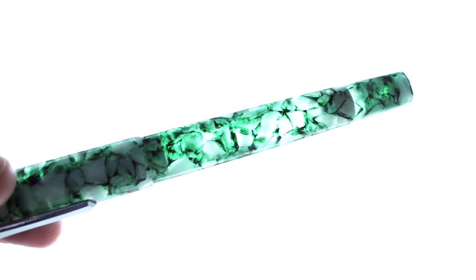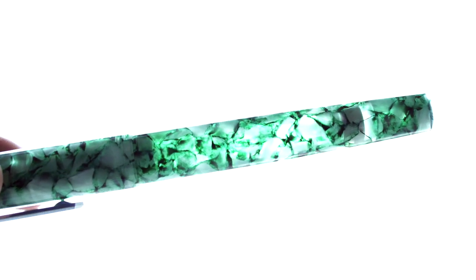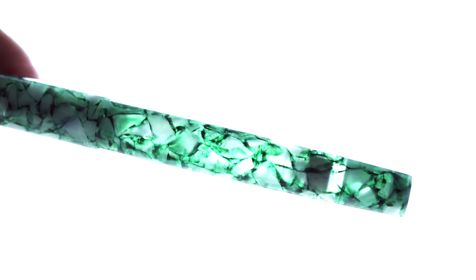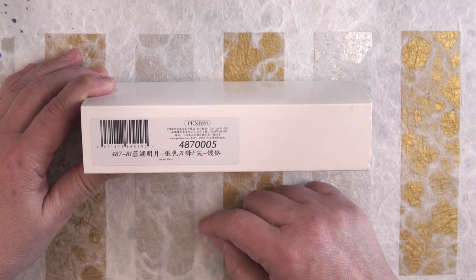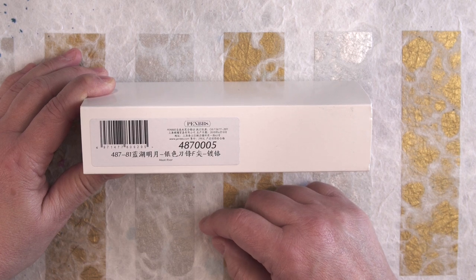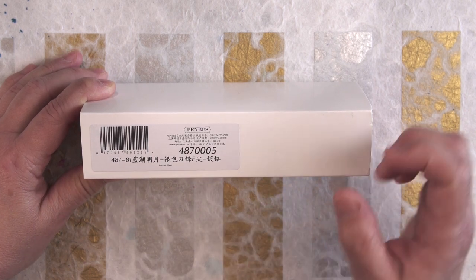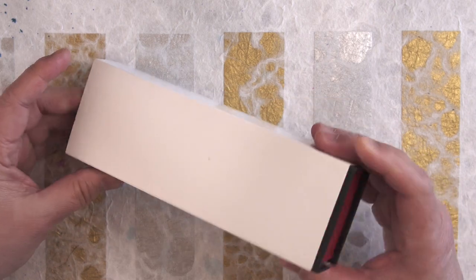This beauty is the Pen BBS 487 in Moon River. It comes in Pen BBS's standard cardboard box with 487 on it and Moon River also on the tag.